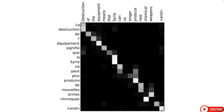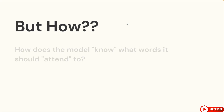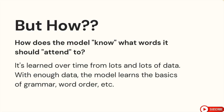The model can basically change its focus as it moves throughout the input. How does it know that 'Syria' is correlated to 'la Syrie' in French? It's learned over time from tons and tons of input data. With enough data, the model learns how language works — the rules of grammar, word order, tenses, and in French, how articles have to agree: 'la Syrie,' not 'le Syrie.' So that's just learned over time with enough data.